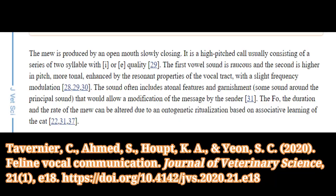Causation: how do cats meow? The mew is produced by an open mouth slowly closing. It is a high-pitched call, usually consisting of a series of two syllables with I or E quality. The first vowel sound is raucous, and the second is higher in pitch, more tonal, enhanced by the resonant properties of the vocal tract with a slight frequency modulation. The sound often includes atonal features and garnishment around the principal sound, which would allow a modification of the message by the sender.